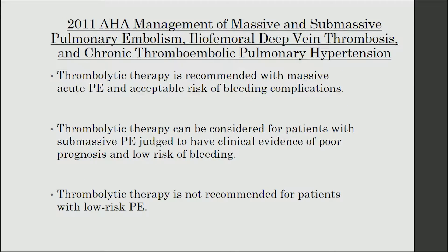Next, we're going to look at the 2011 AHA statement article for the management of massive and submassive pulmonary embolism, iliofemoral deep vein thrombosis, and chronic thromboembolic pulmonary hypertension. This document recommends the use of thrombolytic therapy in patients who fit the criteria for massive PE and have a low risk of bleeding. It also states that thrombolytic therapy can be considered for patients with submassive PE who are judged to have clinical evidence of a poor prognosis and a low risk of bleeding. Lastly, it states that patients with low risk PE should not receive thrombolytic therapy.